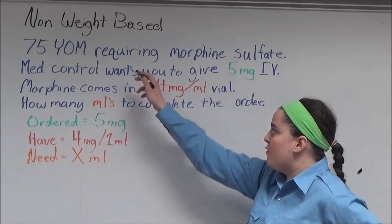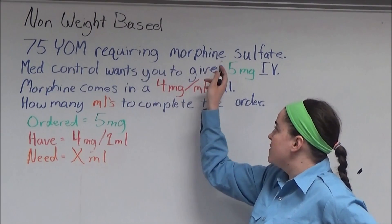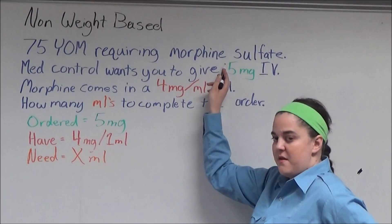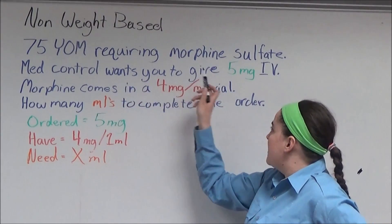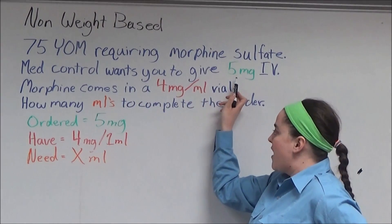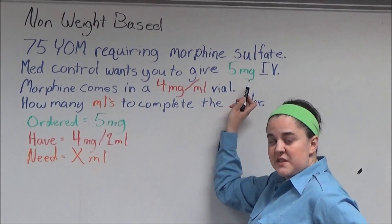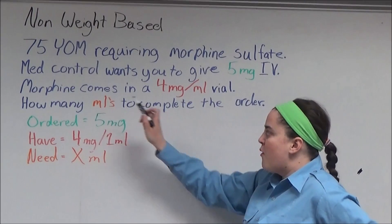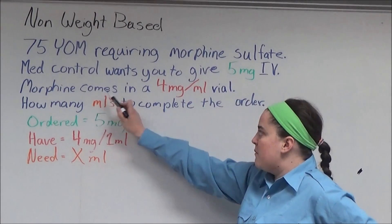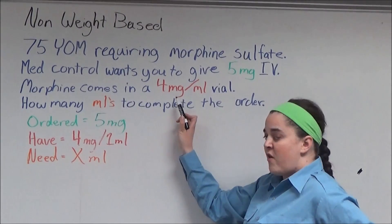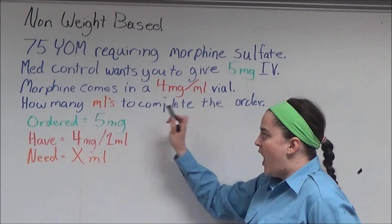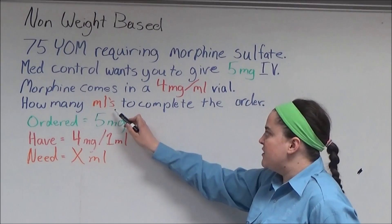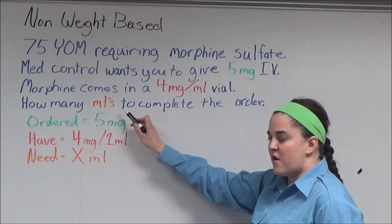A 75-year-old male requires morphine sulfate. MedControl wants you to give 5 milligrams intravenous. Morphine sulfate comes in a 4 milligram per ml vial. How many ml's to complete the order?